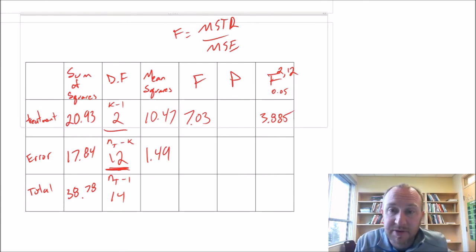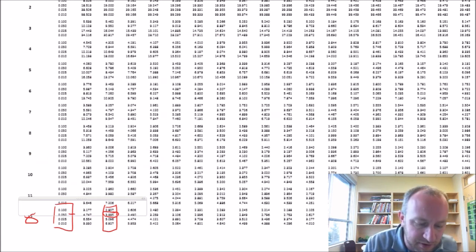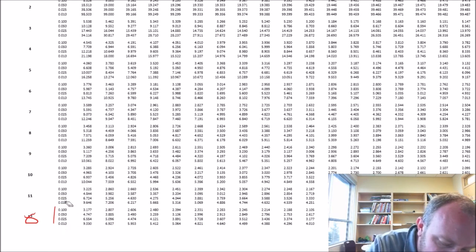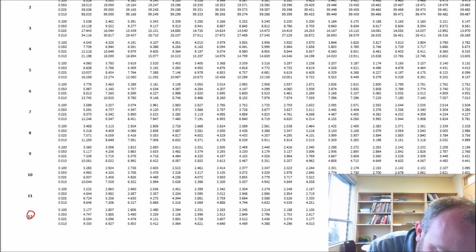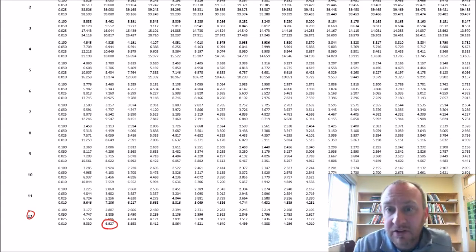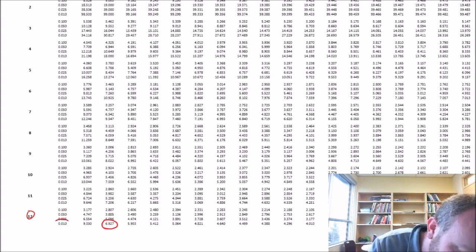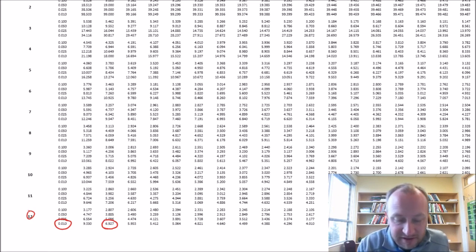Now let's get our p-value. So again, we have a test statistic of 7.03. If we come back to our relevant section here, 7.03 - well, this is larger than the largest value, so our p-value is going to be smaller than the smallest value. So our p-value is going to be something less than 0.01.